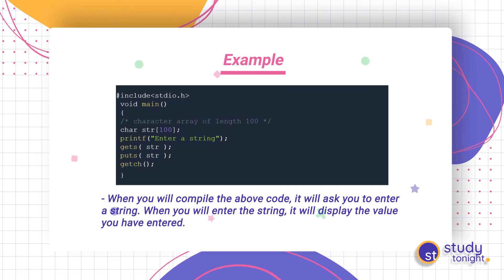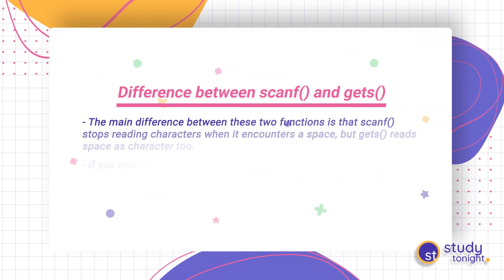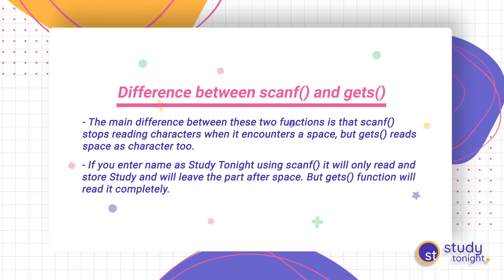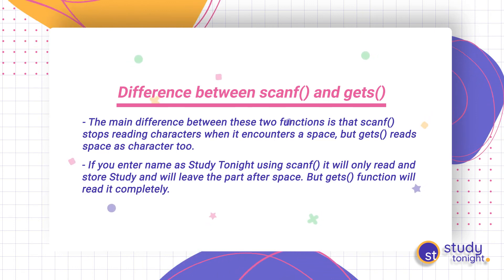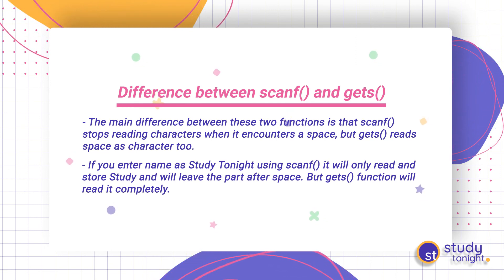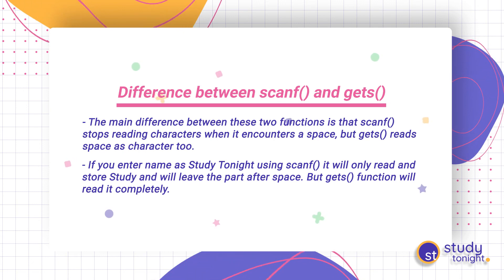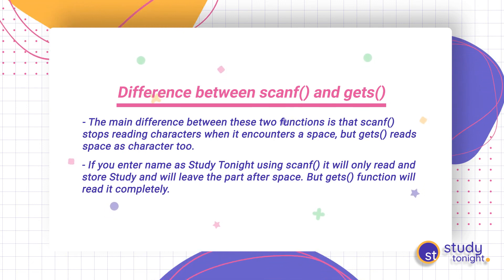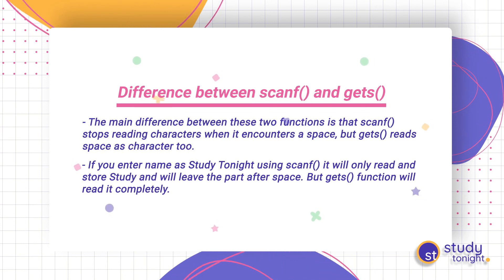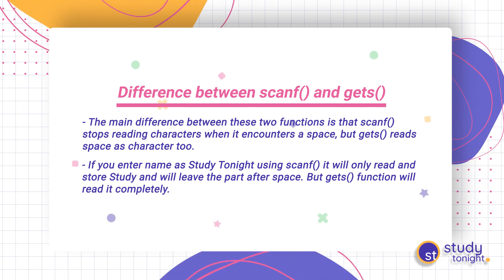The main difference between scanf and gets is that scanf stops reading characters when it encounters a space, but gets reads space as a character too. So if you enter 'Study Tonight' using scanf, it will only read and store 'Study' and leave the part after the space. But the gets function will read it completely as 'Study Tonight' and not just 'Study'.